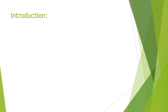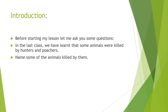Before starting my lesson, let me ask you some questions. In the last class we learned that some animals were killed by hunters and poachers. Can you name some of the animals killed by them? Some of them are elephants, tigers, rhinoceros, crocodiles, snakes, and musk deer.